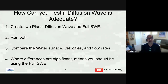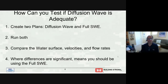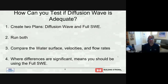To test whether to use diffusion wave or shallow water equations, create two plans changing only which equations are used — one with diffusion wave, one with full shallow water — run them with everything else exactly the same, then compare water surfaces, velocities, and flow rates throughout the study. If there's no significant difference, diffusion wave works just as well and runs faster with larger time steps. But if significant differences appear, you should use the full shallow water equations.